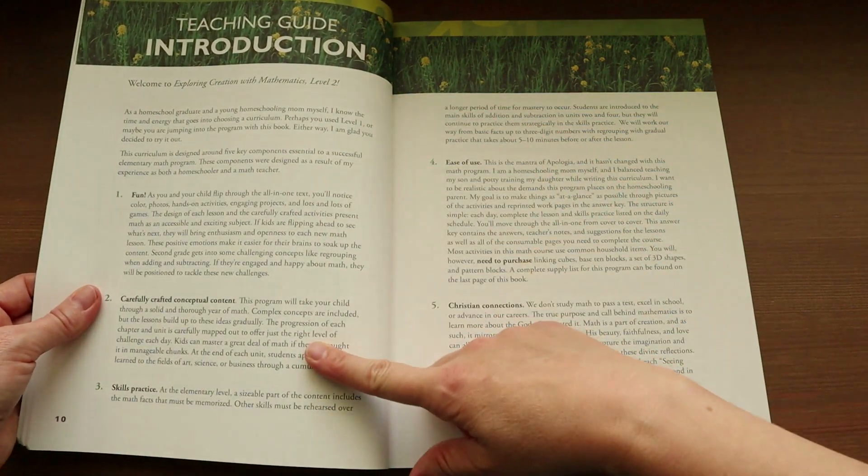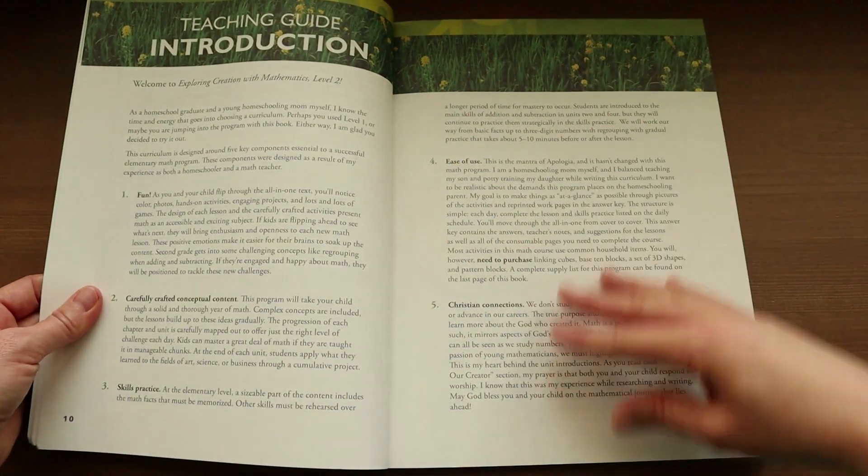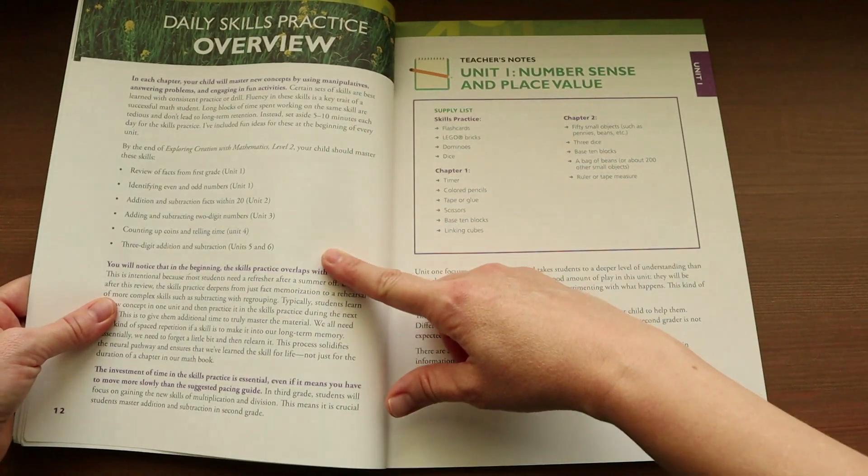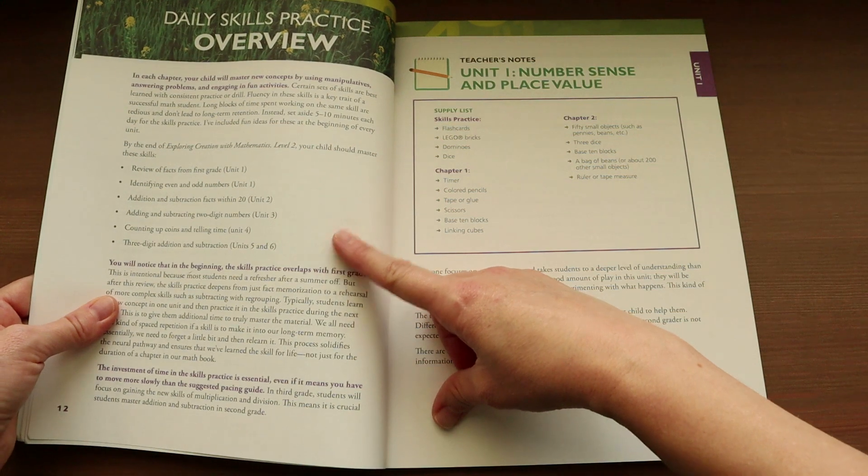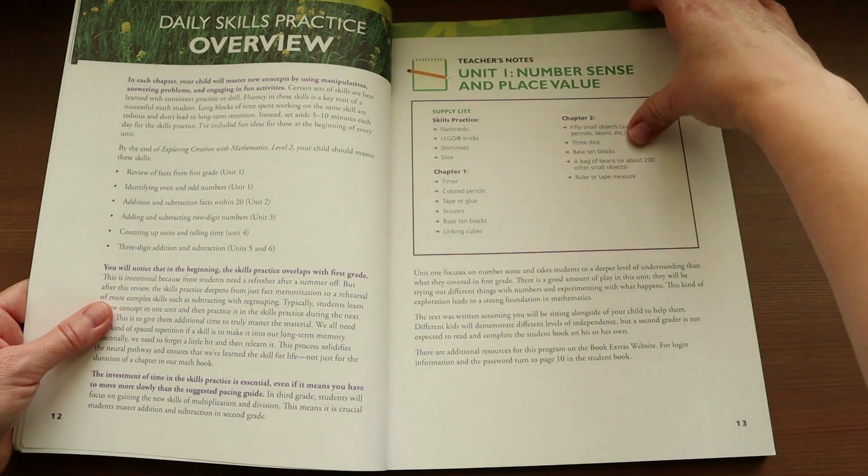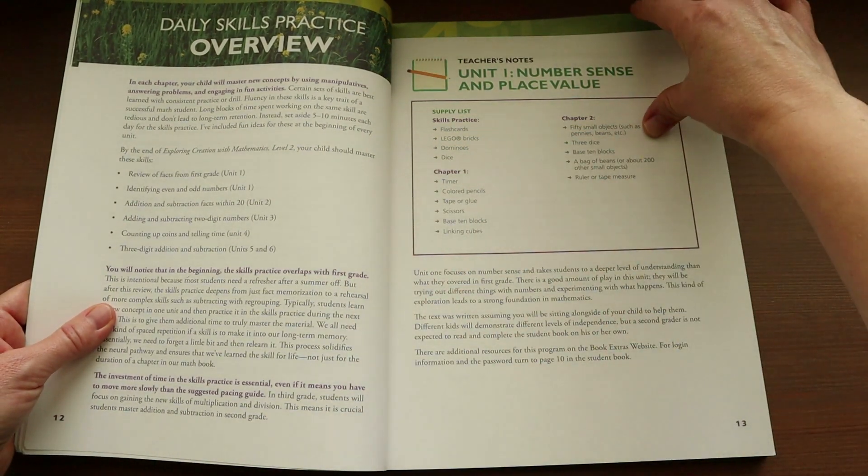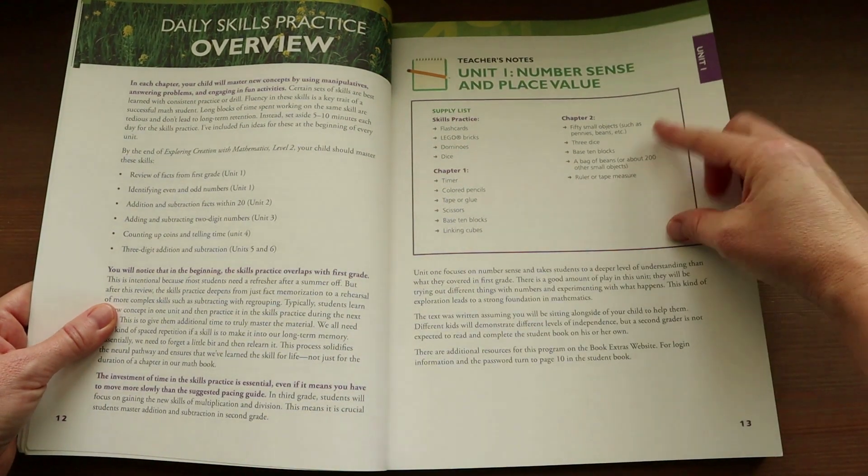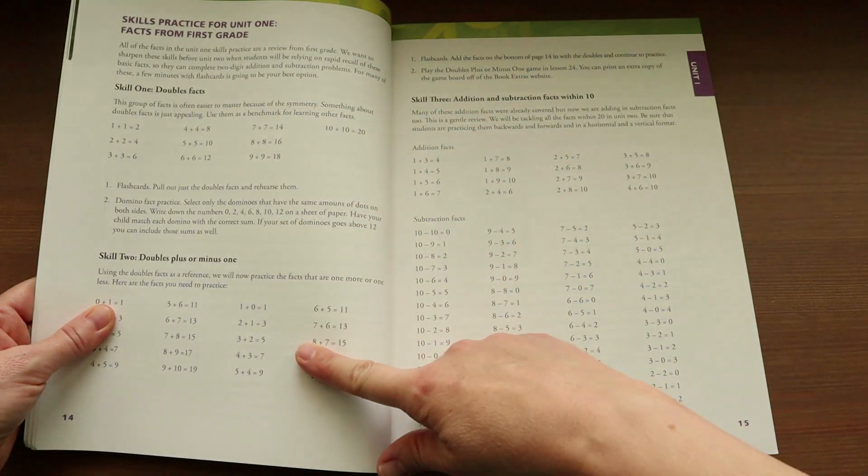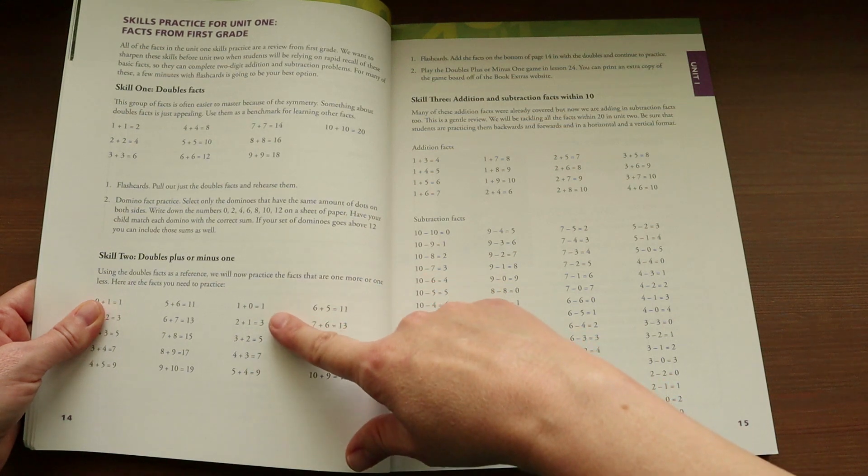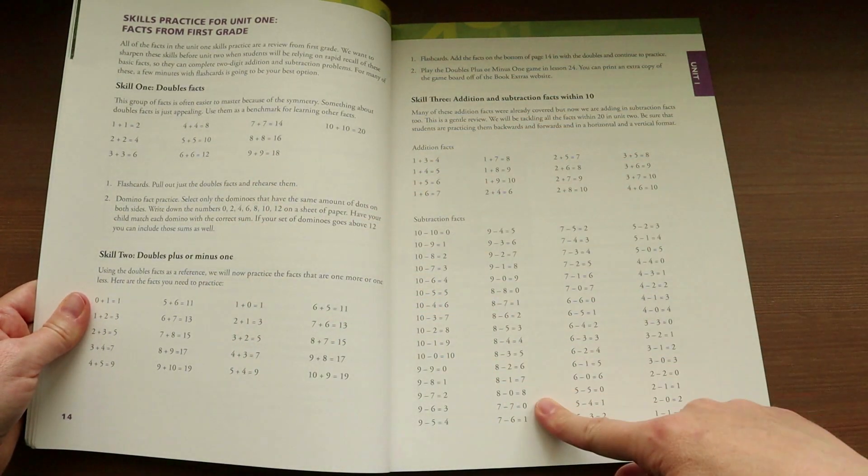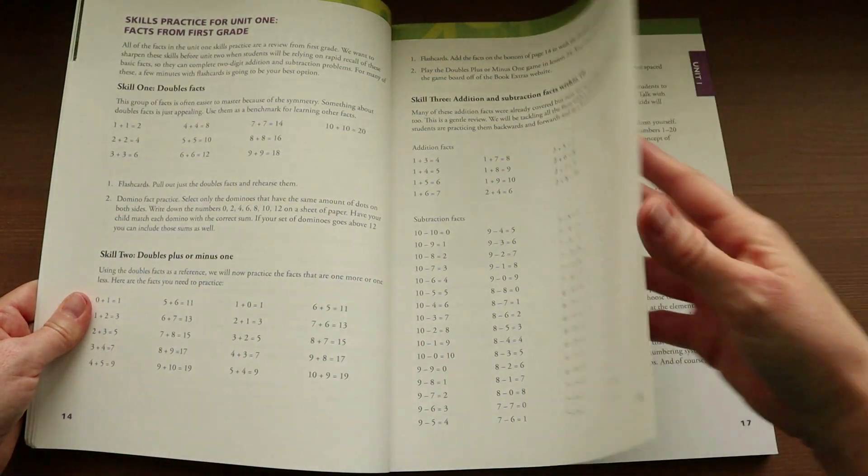It'll have a teaching guide introduction, give you some information on the curriculum and the ways to use it. It'll give you the daily skills practice overview. This is the five to ten minutes before the lesson that I was mentioning. Then it gives you teacher notes with the supply list for the first two chapters. And then this is the skills practice for the first unit. Your child is going to make sure that they have these addition and subtraction facts mastered throughout the first unit.